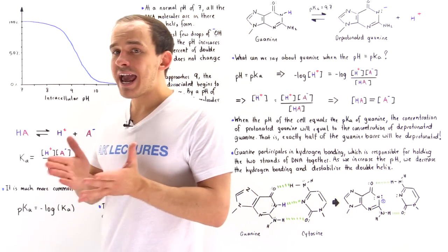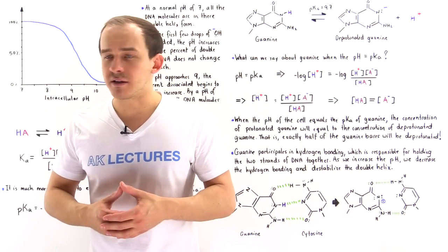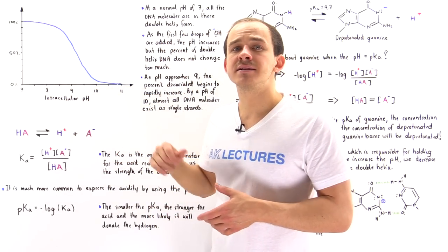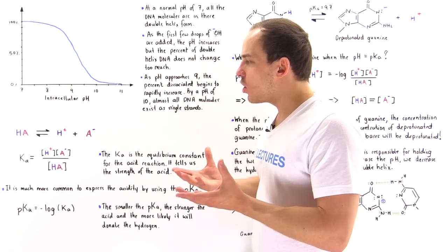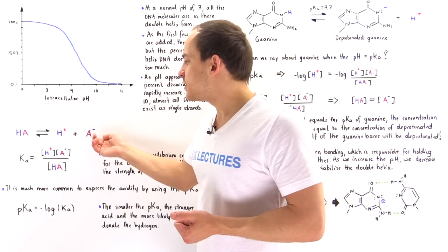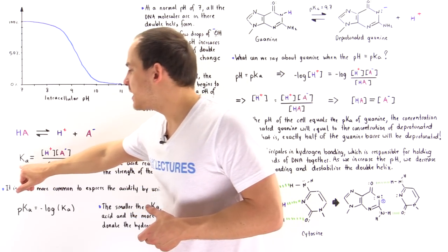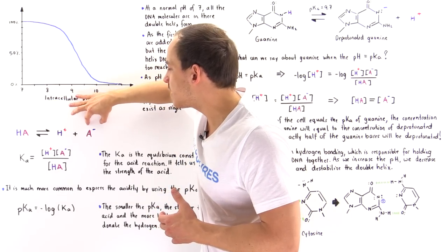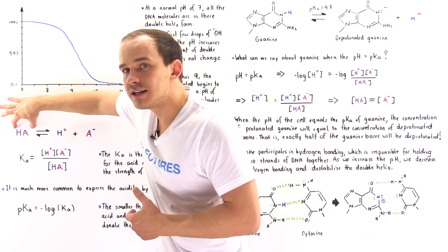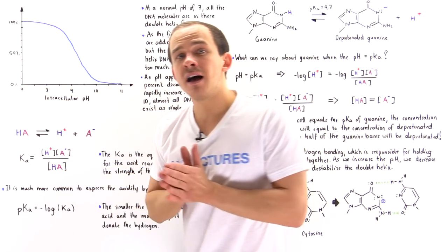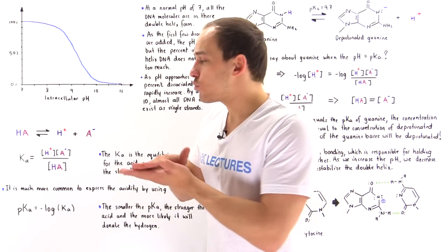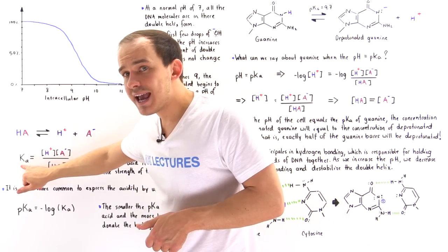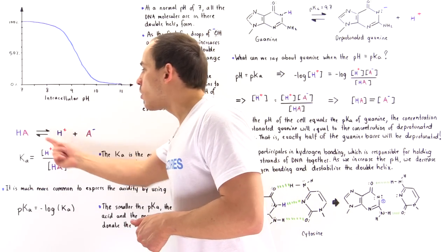Let's begin by recalling what Ka and pKa are with respect to some hypothetical acid. Suppose we have an acid that dissociates into the H⁺ ion and its conjugate base. From basic chemistry, the equilibrium constant expression for this reaction gives us the Ka — the acid dissociation constant — which is equal to the product of the concentration of the two products divided by the concentration of the acid.